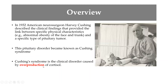Cushing's syndrome was first described by neurosurgeon Harvey Cushing. While studying pituitary tumors, he was the first to make a linkage between pituitary tumors and the presence of certain signs and symptoms such as obesity, facial changes like moon face, and truncal obesity. The disease was subsequently named after him.